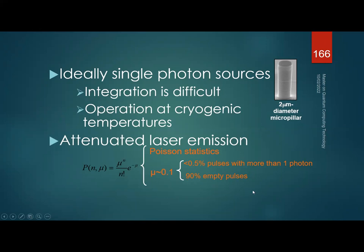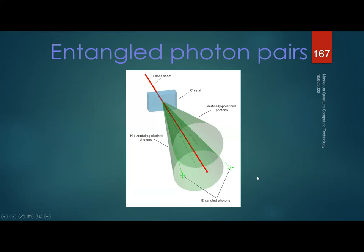Entangled photon pairs are generated through spontaneous parametric down-conversion: you excite a nonlinear crystal with a pump wavelength and get two output photons — the idler and signal — that are entangled. The problem is that generating entangled photon pairs at high speed is a significant challenge that many researchers are working to solve.